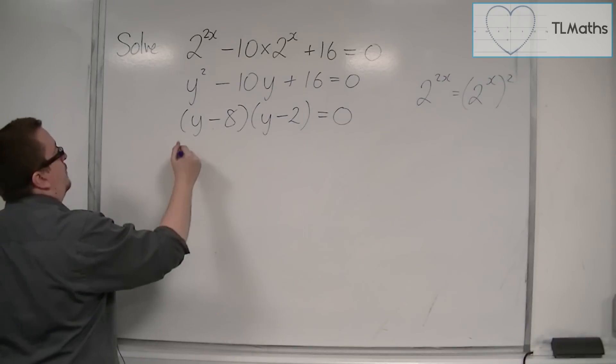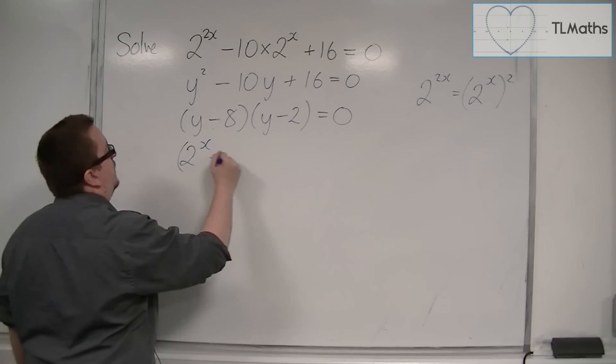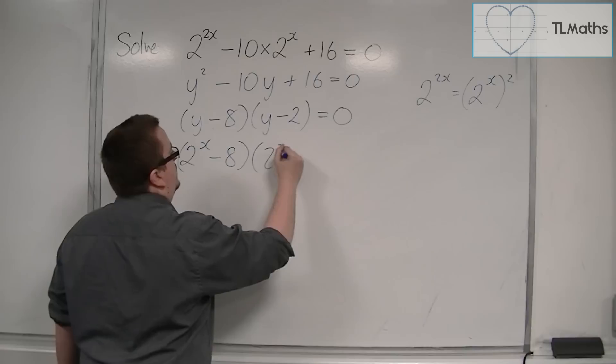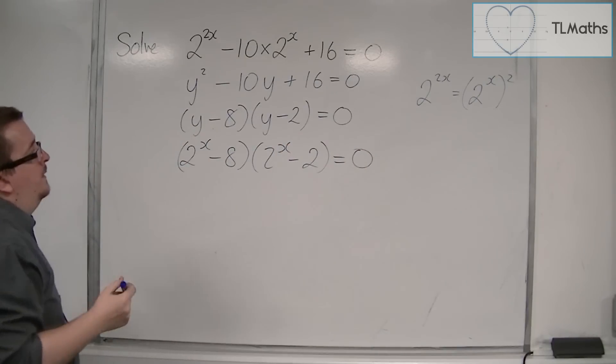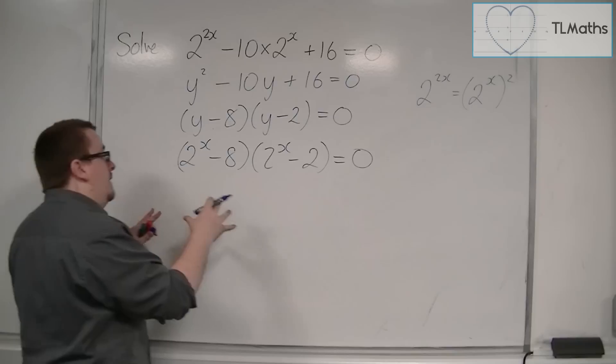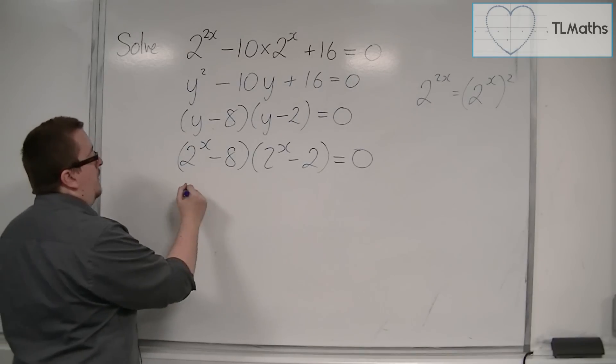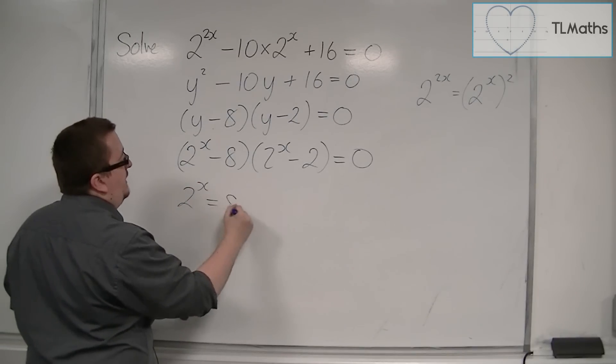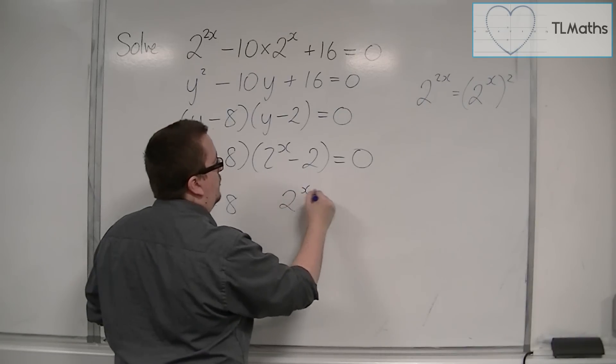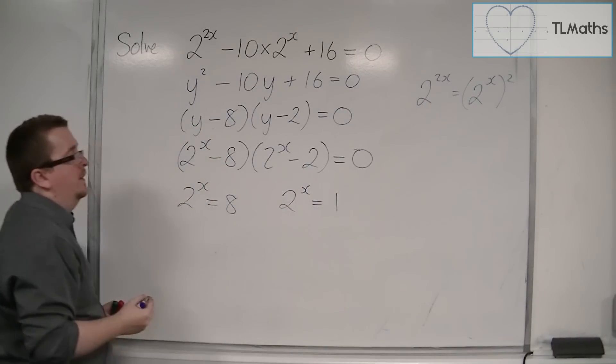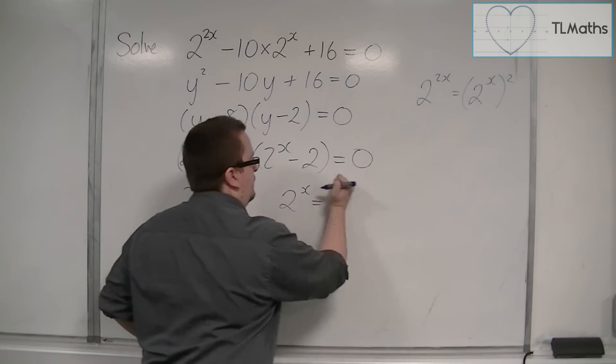And so, if we put the 2^x back in, we've got (2^x - 8)(2^x - 2) = 0. Now, here, you can then say to yourself, well, 2^x must be equal to 8 from that bracket, and 2^x must be equal to 2 from that bracket.